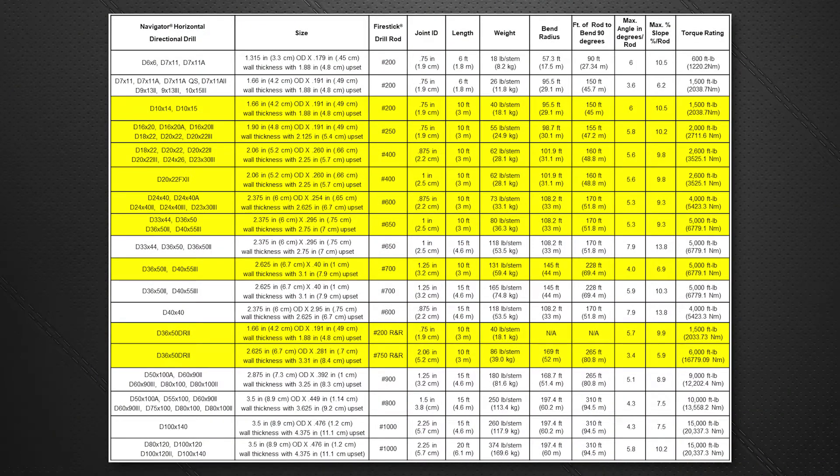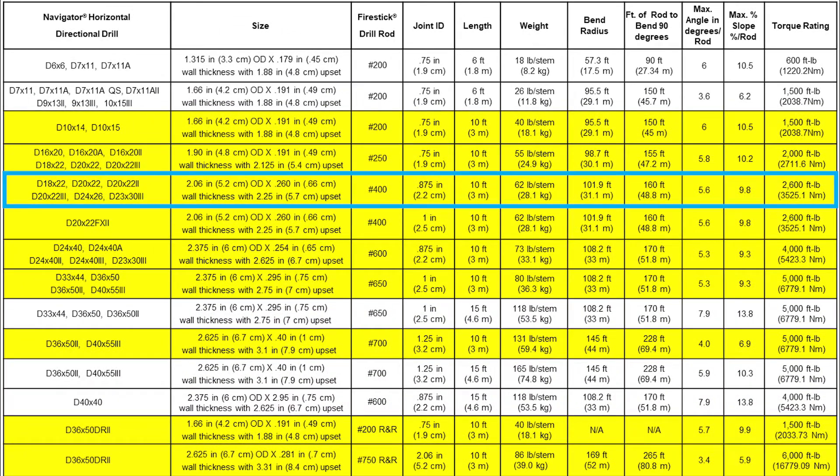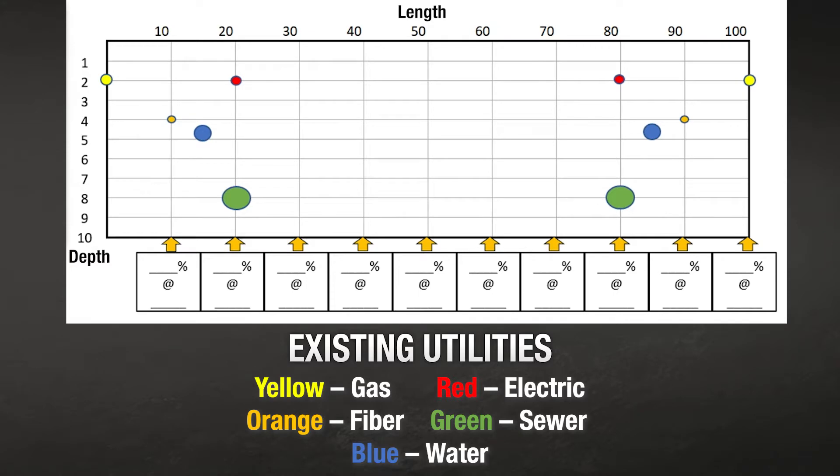Here's a chart that shows the Vermeer HDD machines and the drill rod specifications. For this example, I'm going to reference a D20x22 S3 Navigator horizontal directional drill, which has 10-foot rod and a max bend of 9.8%. Rounding this up to 10% for the maximum pitch change allows for quick math. Using this information and job site parameters such as existing utilities and job site specifications,